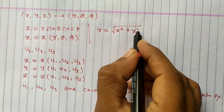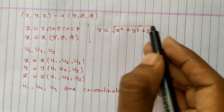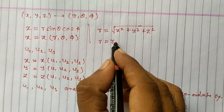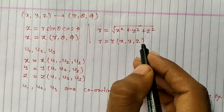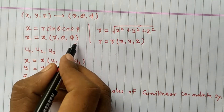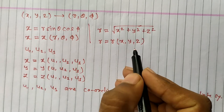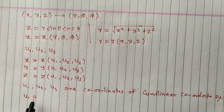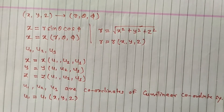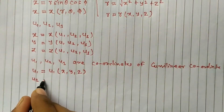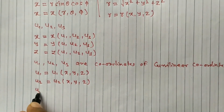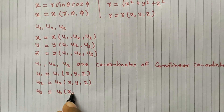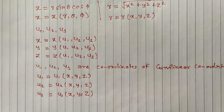Similarly, I can write r is equal to the square root of x squared plus y squared plus z squared. So r is a function of x, y, z. Here you can see x is a function of r, theta, phi, and r is a function of x, y, z. Similarly, u1, u2, u3 are each functions of x, y, z coordinates.